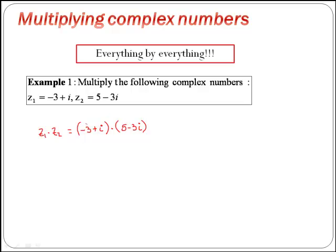If we multiply out the brackets, we have minus 3 by 5, which is minus 15. Then minus 3 by minus 3i, which is plus 9i. And then i by 5, which is plus 5i.